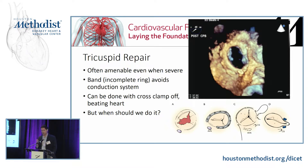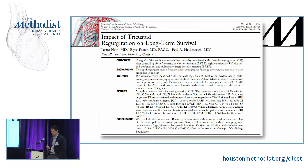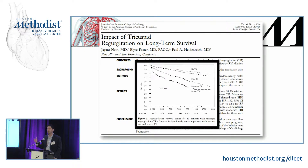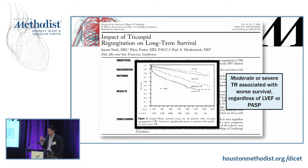The big unanswered question is when we should be intervening. A dilated annulus and severe TR make an easy case, but even patients with moderate TR do worse — regardless of EF and regardless of PA pressures. Whether everyone with moderate TR should get a tricuspid ring is still not fully resolved, though the pendulum is currently swinging toward being more aggressive with treating TR.